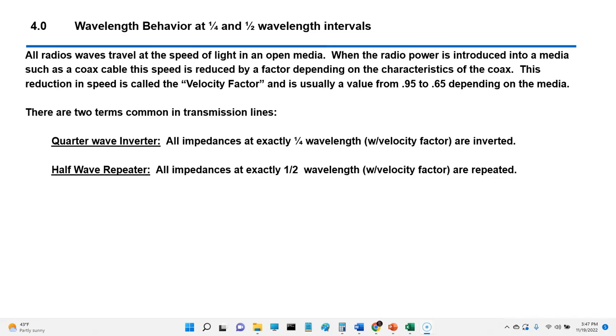A couple of terms I'm going to go over today are quarter-wave inverter. In other words, all impedances at exactly one-quarter wavelength with the velocity factor included in the factoring are inverted. Impedances are inverted. And then all half-wave wavelengths are repeated with the velocity factor and frequency. So velocity factor and frequency are constants in all the following slides I'm going to show you, because if you change the frequency or the velocity factor, all these numbers are going to change.